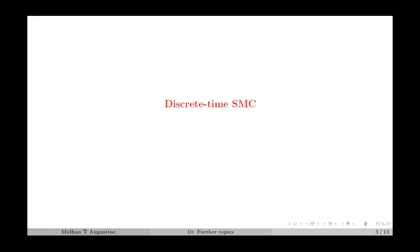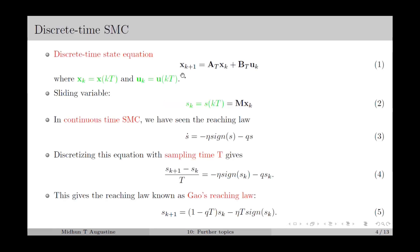We start with discrete-time SMC, considering the discrete-time system as given in equation 1, where x_k is the discrete-time state vector, which can be considered as the continuous-time state vector at time instant kT, where T is the sampling period.